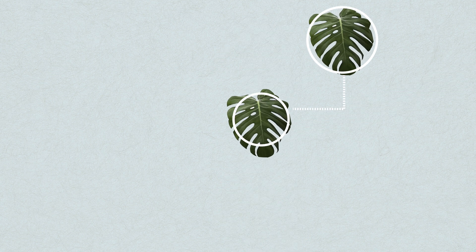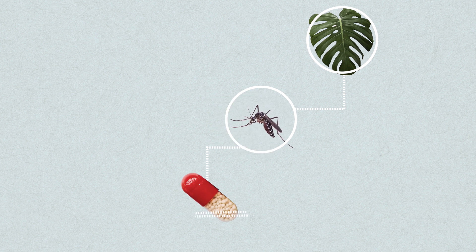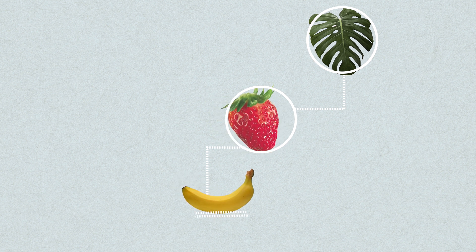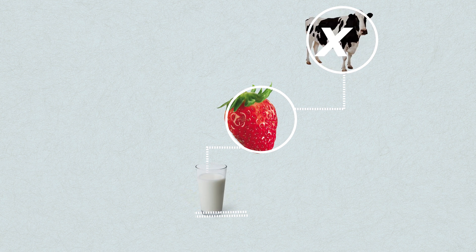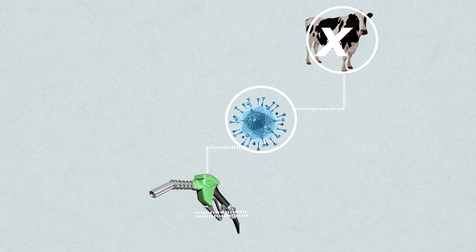We can also change the DNA of life forms to have them expressing specific molecules. This is how we design bananas that taste like strawberries, milk that can be made without cows, and bacteria that produce and secrete petroleum.